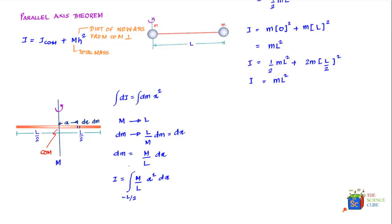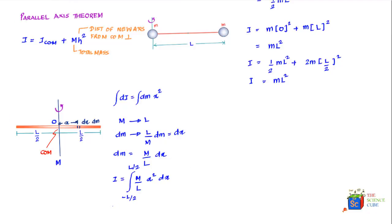Integrating from −l/2 to +l/2 (taking the center of mass as the origin), I = (m/l)∫x²dx from −l/2 to l/2, which evaluates to I = (1/12)ml².